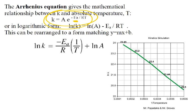E sub A, recognize that, that is our activation energy. R is the ideal gas constant, 8.314. T is temperature in Kelvin.